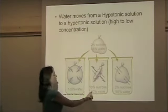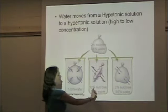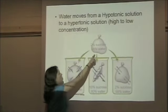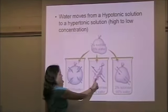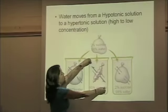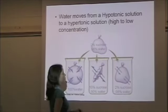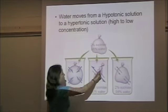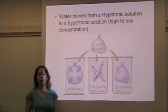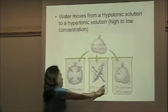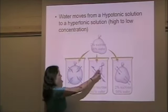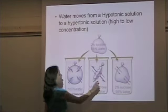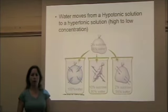In the second beaker, the solution is 90% water and 10% sucrose. When we put the same bag in, there's more water in the bag, which has 98% water. So water's going to move out of the bag into the beaker, and the bag is going to shrink. In this case, the bag is hypotonic — having more water — and the beaker is hypertonic — having less water. Water moves from high concentration in the bag to a lower concentration of water outside the bag.